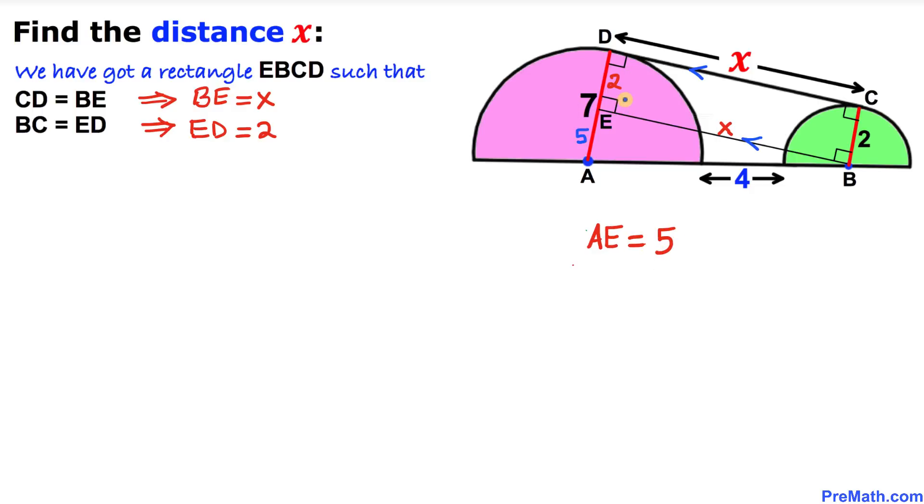And now once again let's focus on this purple semicircle. We know its radius is 7. So once again this is also a radius of this purple semicircle. So this is going to be 7 as well. And now let's focus on this green semicircle.